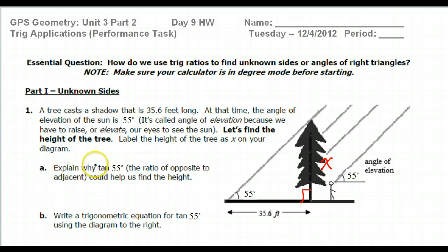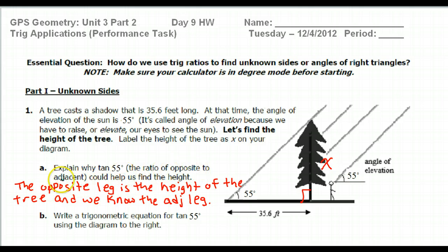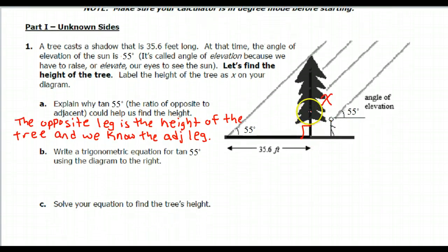Explain why tangent 55, opposite over adjacent, could help us find the height. Because if we're talking opposite and adjacent, the opposite leg is the height of the tree, which is what we're looking for. And the adjacent leg is something that we know, 35.6. So that's why this would help us.